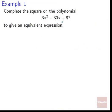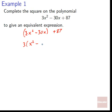Complete the square on 3x² − 30x + 87 to give an equivalent expression. We didn't formally talk about completing the square when it wasn't equal to zero, but we follow the exact same method. First, we treat the 87 as being off to the side. We have a 3 in front, so we pull it out: 3(x² − 10x) + 87.